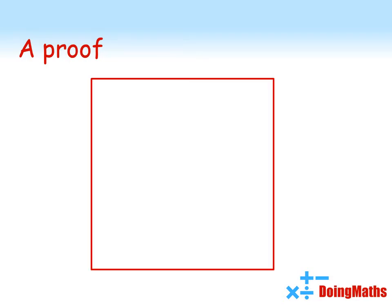Let's take a large square. Now if we put a smaller square at an angle inside it, we can see we've created four right-angled triangles around the edge.